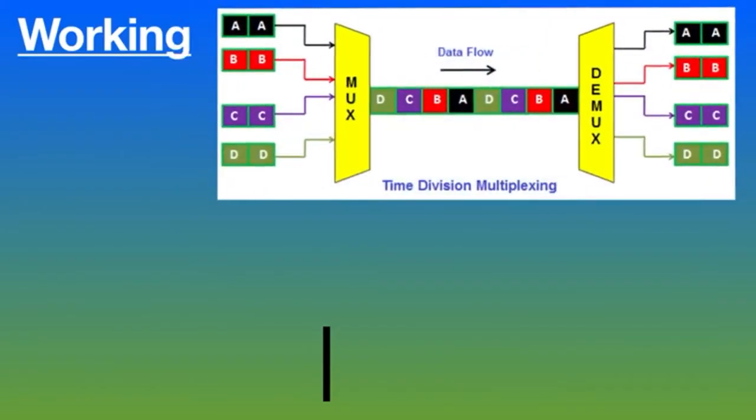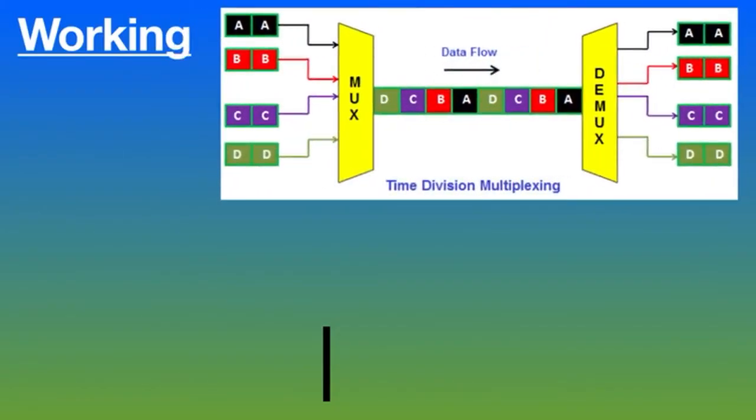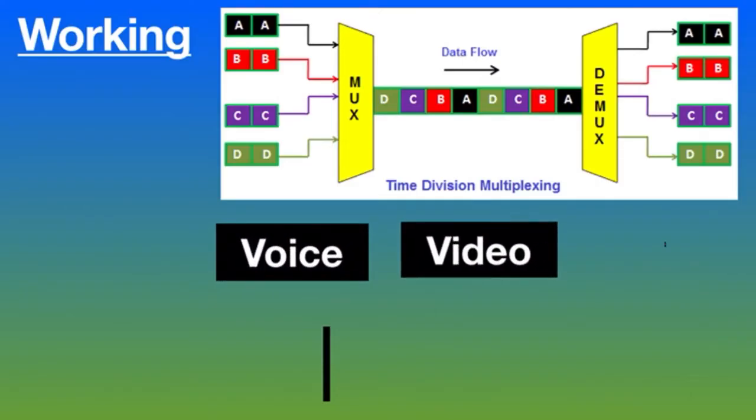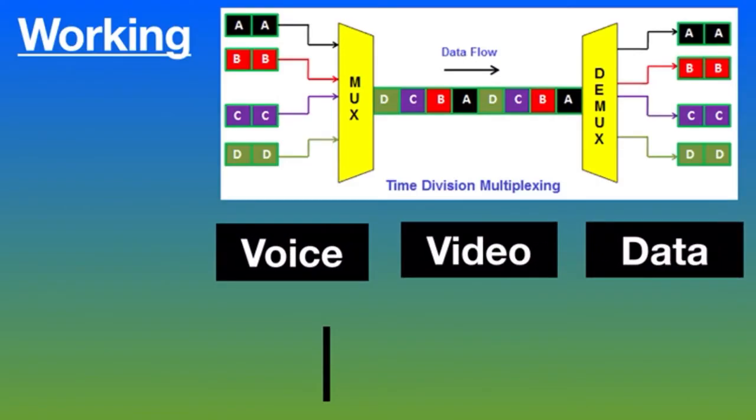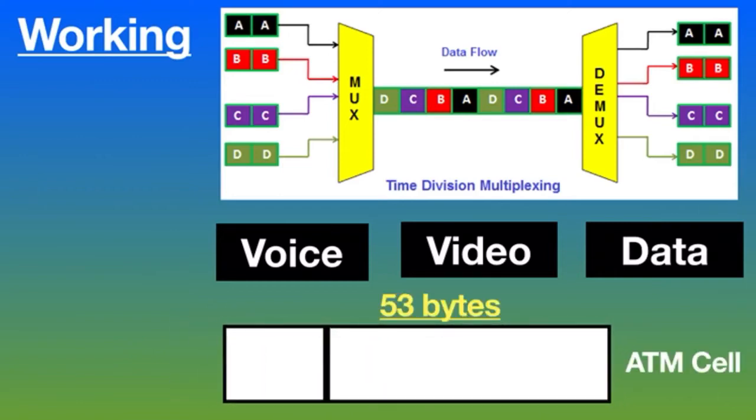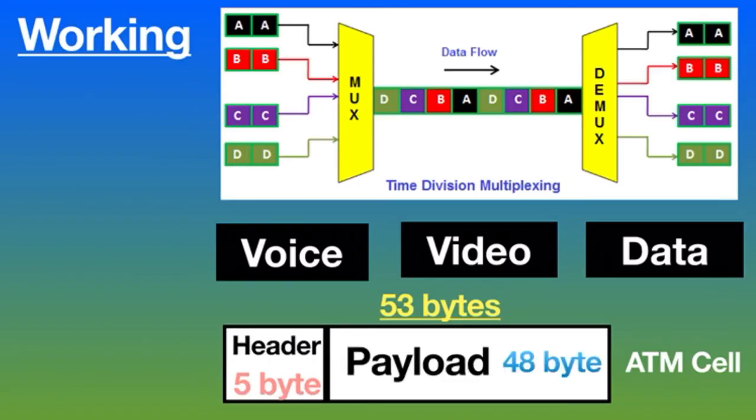Let's talk about the working of ATM. ATM is a switching technique that uses time division multiplexing for data communications. ATM networks are connection-oriented networks for cell relay that supports voice, video, and data communications. It encodes data into small fixed-size cells so that they are suitable for time division multiplexing and transmits the device that supports them over a physical medium.